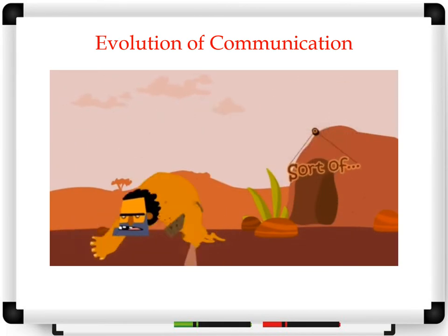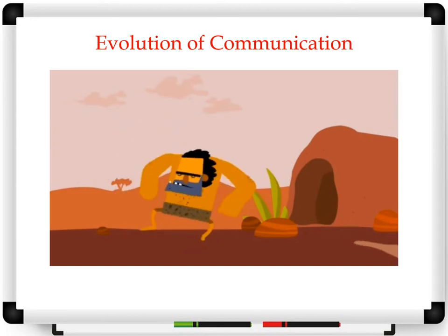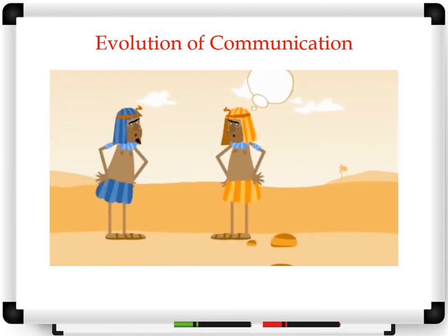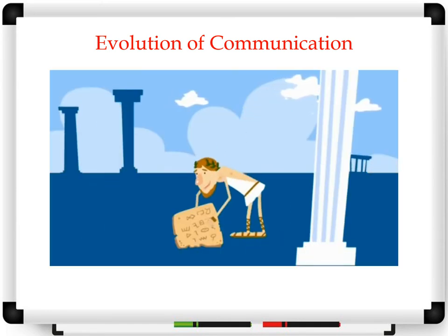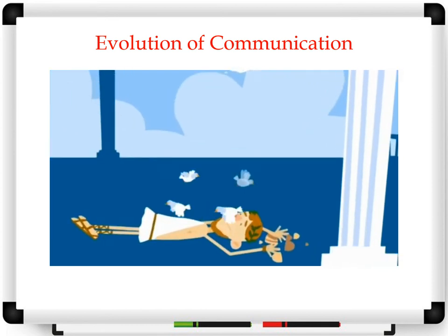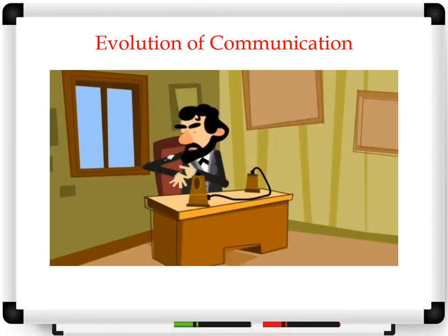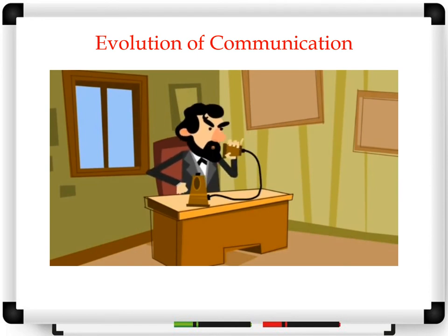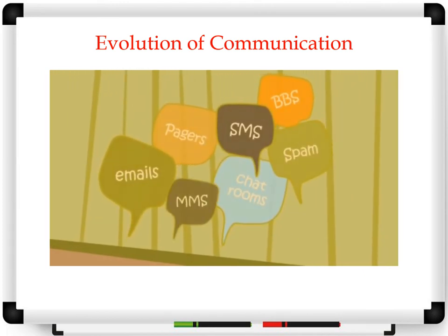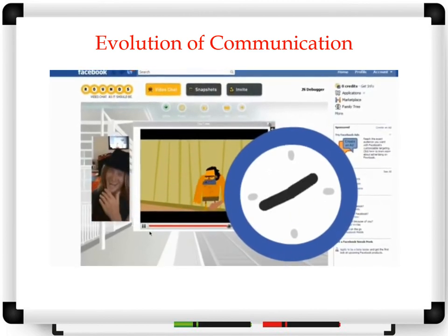Well, sort of. It began with shouting, but the only problem was that sound didn't travel that well. So we sent runners to deliver messages, but it took them too long to arrive and they usually forgot the message. We moved on to carving stone messages, but they took even longer to arrive and were too heavy. So we trained doves to carry letters. Then Bell invented the telephone, but he was the only one with a working line. So we moved on to technology — pagers, BBS, chat rooms, emails, spam, SMS, MMS, IM. But there was still a gap in communication, until now. Introducing Rounds — a totally new way to connect live on Facebook.